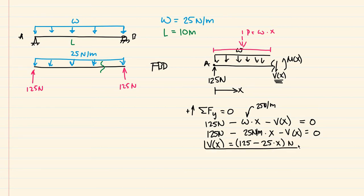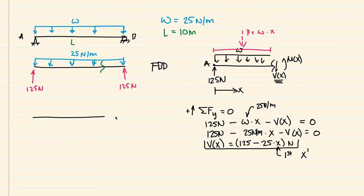This is our equation for the internal shear at any point x in the span A to B. Notice that this equation is linear because x is raised to the first power. That means our shear diagram is going to be linear. We can use this equation to plot points along the diagram.